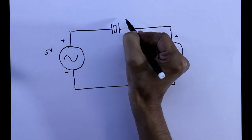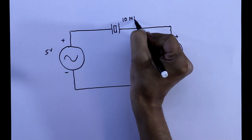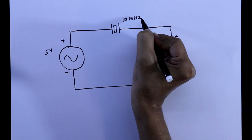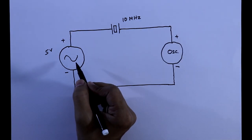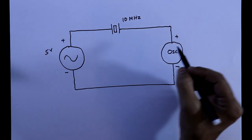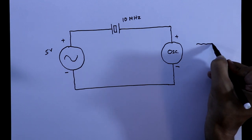Now let's say it is 10MHz and the frequency of this is something else. Then we will get an output like this.